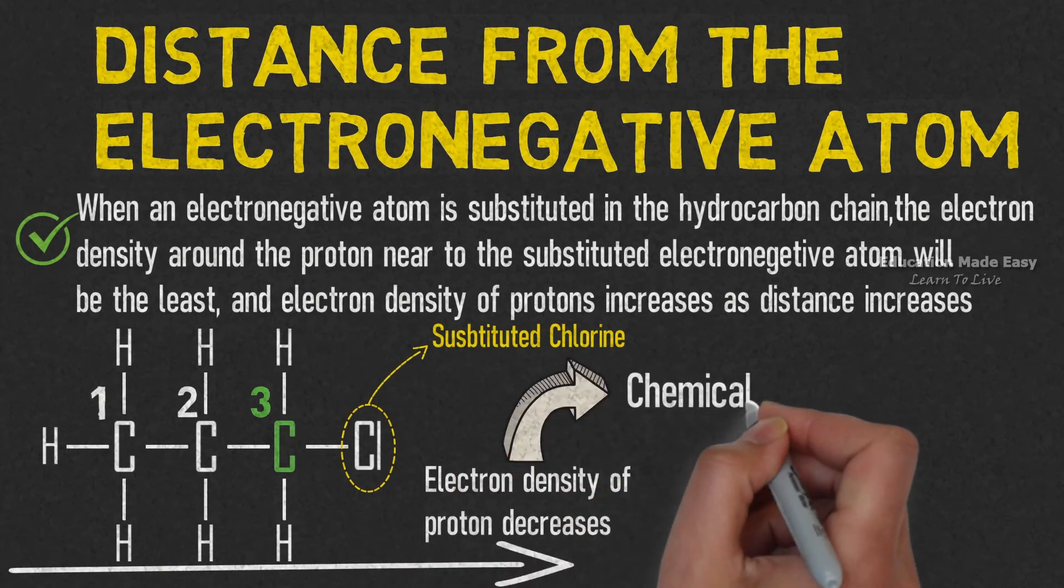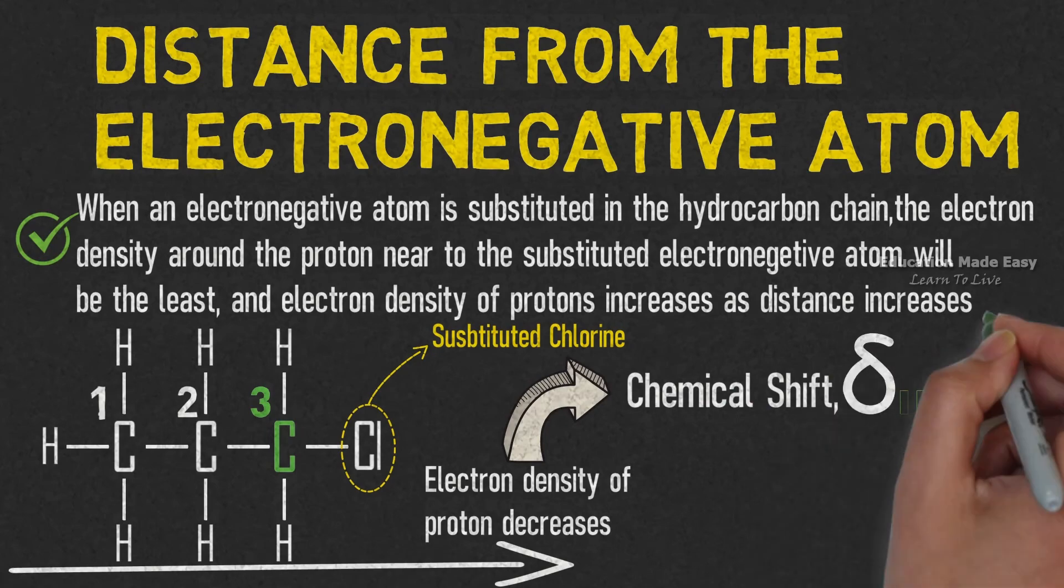As the electron density around the proton decreases, the value of chemical shift increases.